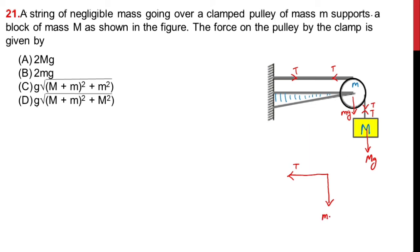So we can write here: small m plus capital M into g — that is the force acting vertically downward. Now in the first picture, this is in equilibrium, so we can write the tension T is equal to capital M into g. So tension is given by capital M into g.